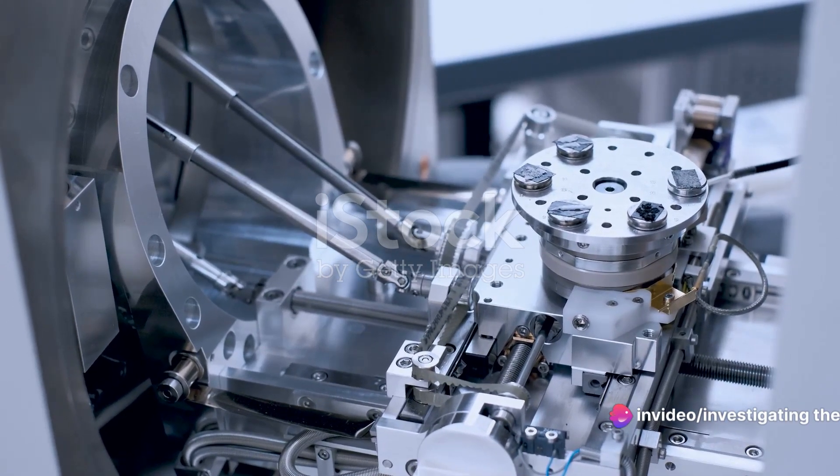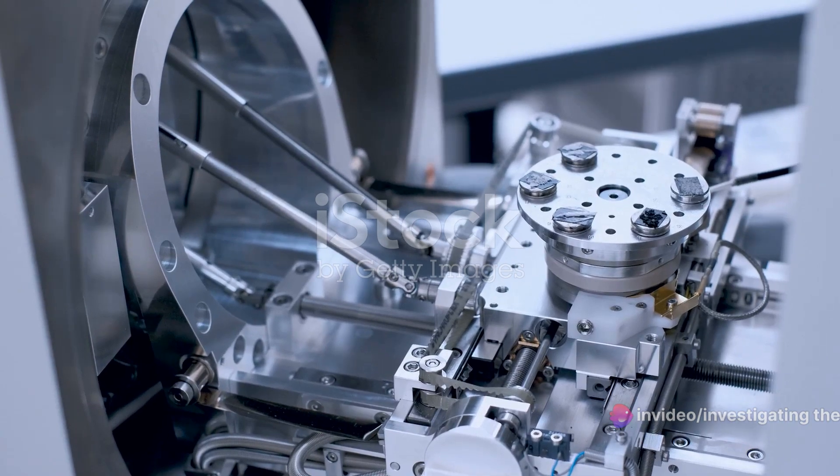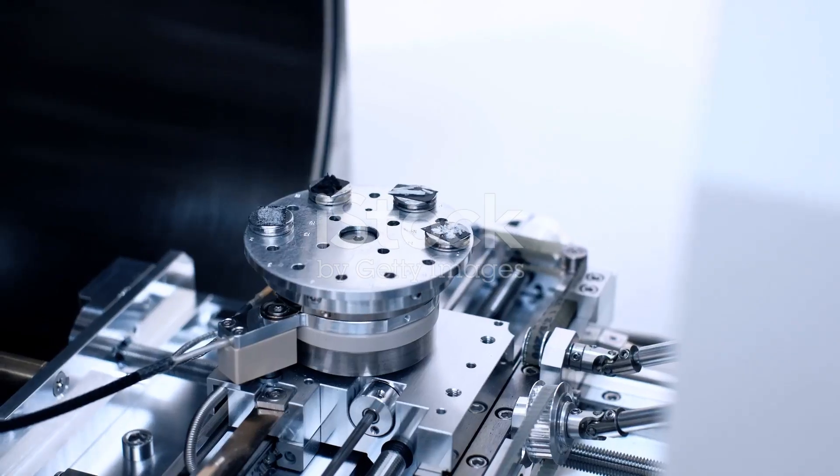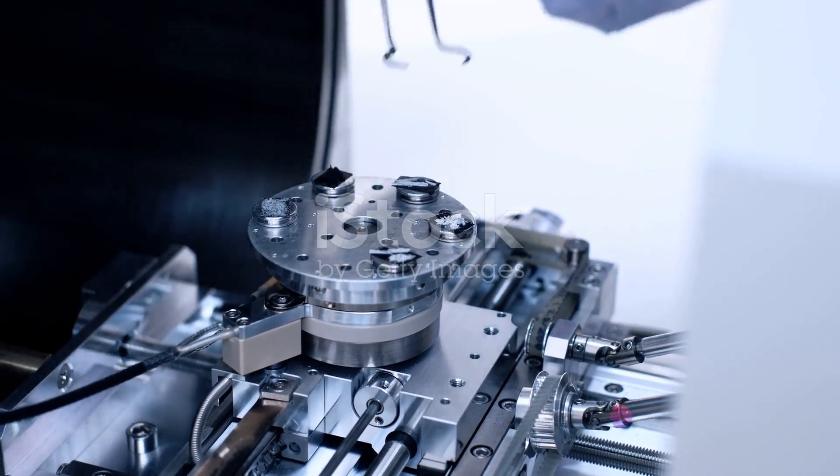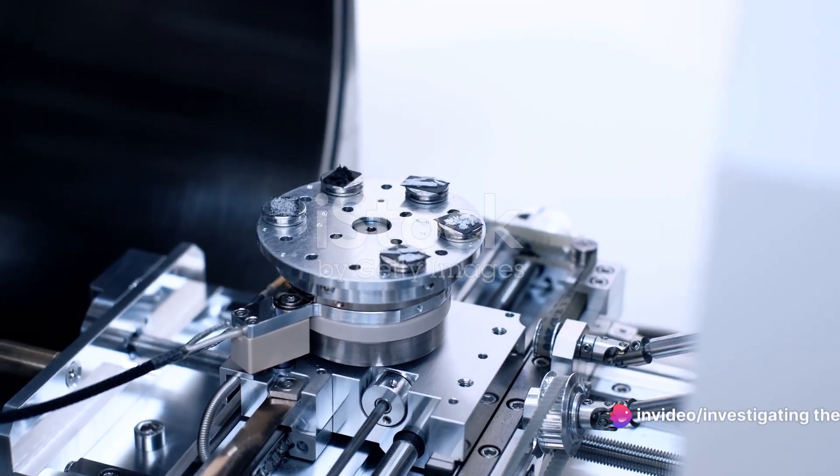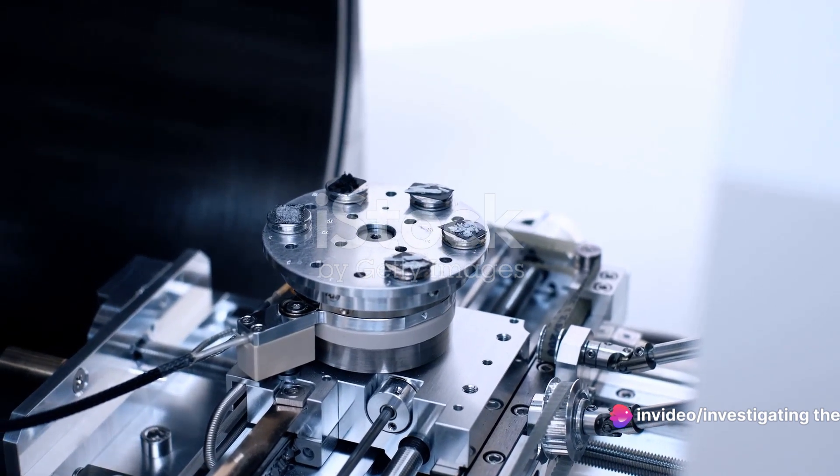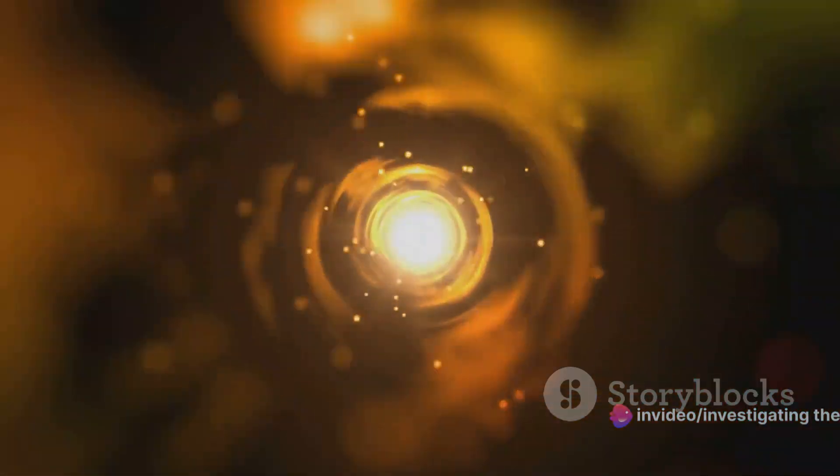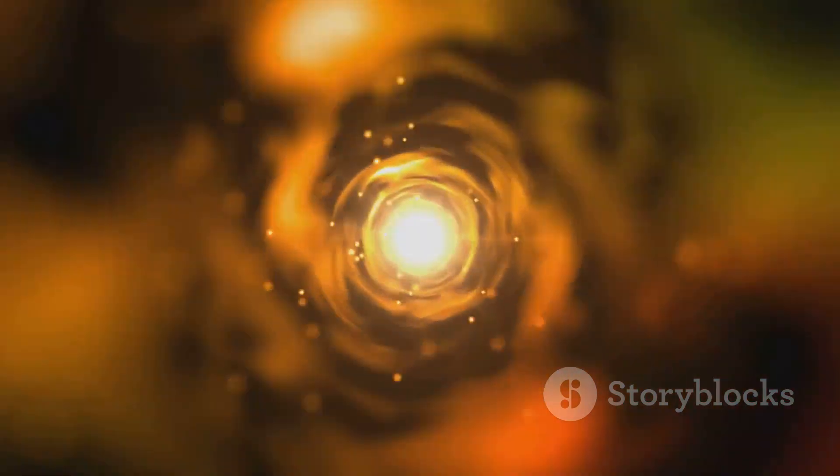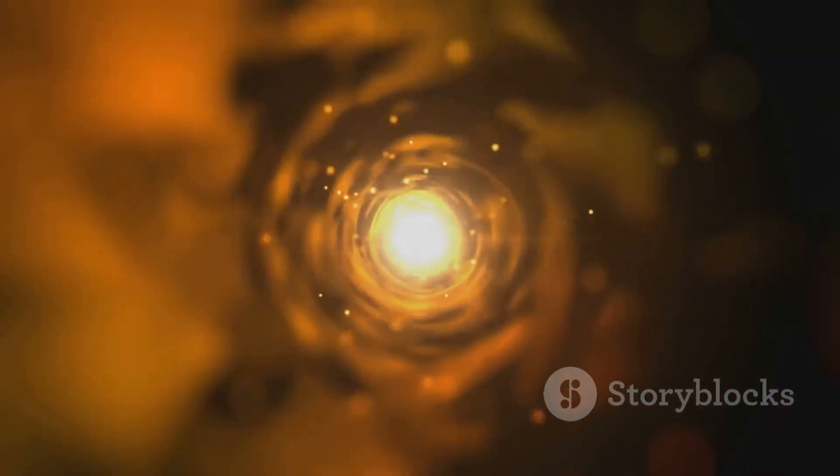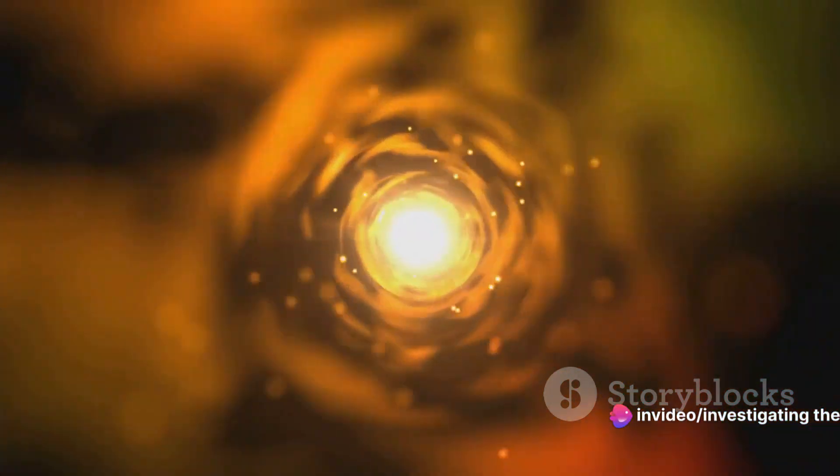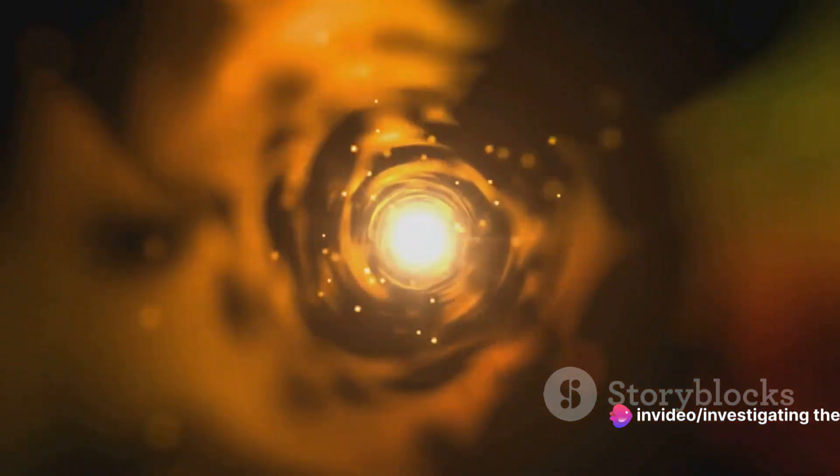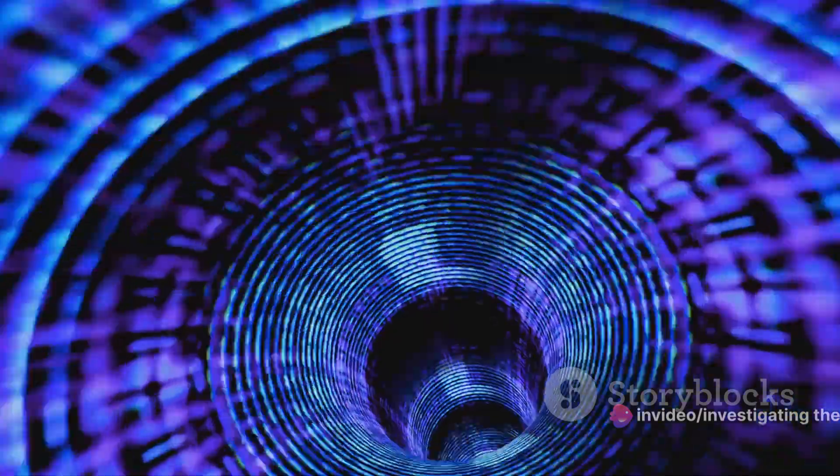Now let's move on to another marvel of technology, the scanning tunneling microscope, or STM for short. This powerful tool gives us the ability to view and manipulate individual atoms. The secret behind its power? You guessed it, quantum tunneling. STMs use a phenomenon known as tunneling current, a stream of electrons that quantum tunnel from the microscope's tip to the surface being examined. This allows the STM to map the atomic landscape with remarkable precision, pushing the boundaries of scientific exploration at the atomic level.